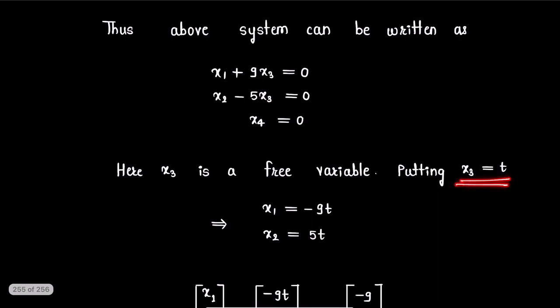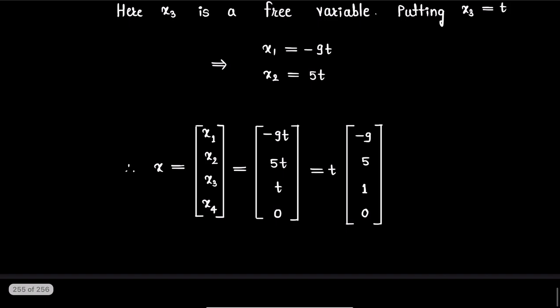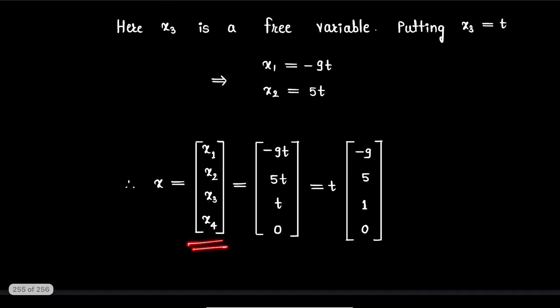So, after putting x3 equals t in this system, we get x1 equals minus 9t and x2 equals 5t. So, the vector x in kernel T becomes [-9t, 5t, t, 0], which can be written as t times this vector [-9, 5, 1, 0].